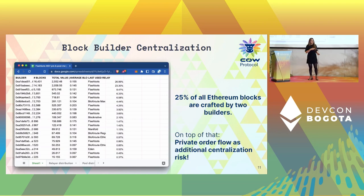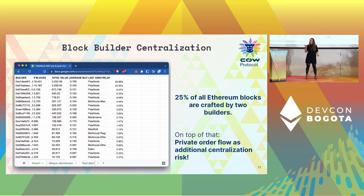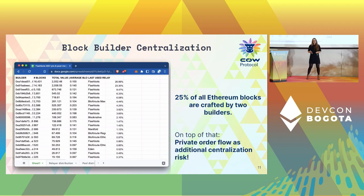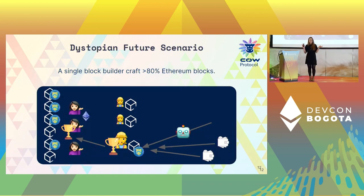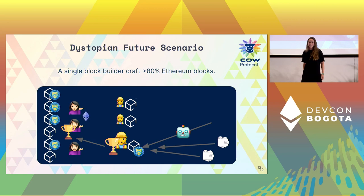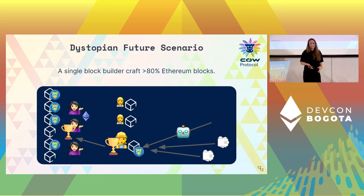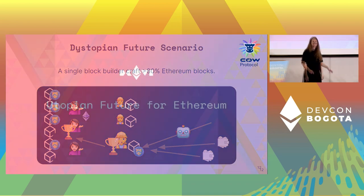Adding the private order flow argument again: if anyone decides to sell their order flow to one of these individual block builders, you get very fast and accelerated centralization. These builders win even more market share, and suddenly the dystopian future scenario for Ethereum doesn't seem so unlikely. Already today two block builders hold 25% market share and can easily grow this very quickly.